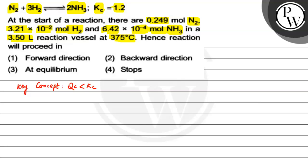If Qc is less than Kc, the reaction proceeds forward. If Qc equals Kc, the reaction is at equilibrium. And if Qc is greater than Kc, the reaction will proceed backward. We will identify what will happen.